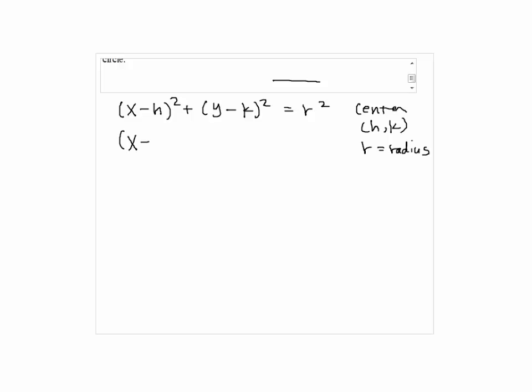So by plugging in we have x minus 6 squared plus y minus negative 4 squared equals 4 squared. So x minus 6 squared plus y plus 4 squared equals 16.